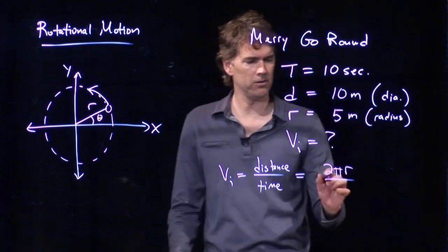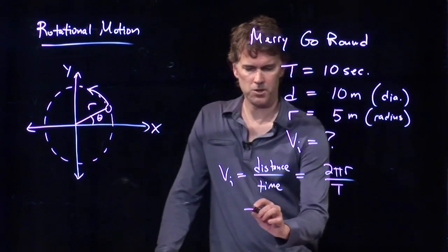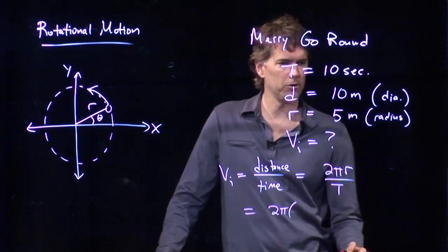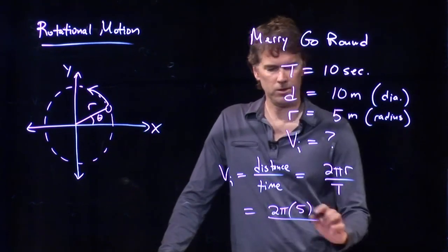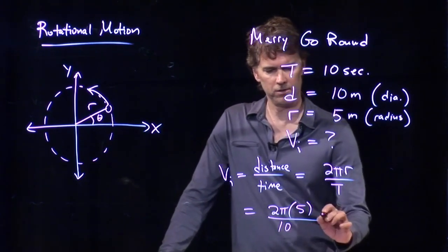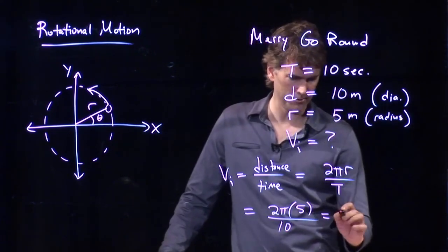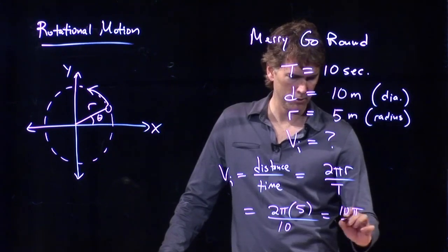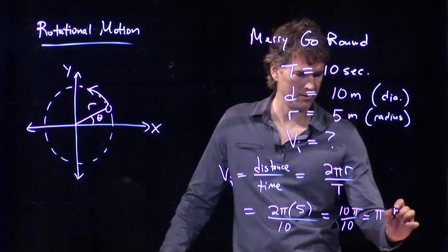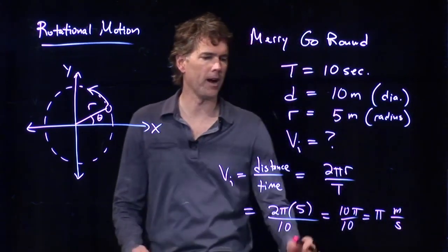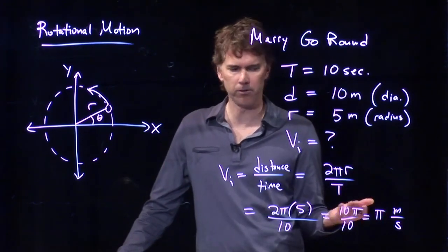The distance that we go once around is 2 pi r. How long it takes is the period T. And so we get 2 pi times r, we said was 5 meters. T, we just said, was 10 seconds. And we chose some numbers rather nicely, right? We've got 10 pi over 10. And so that is, in fact, pi. And the units are meters per second. So how fast are you going? In our case, you're going 3.14 meters per second.